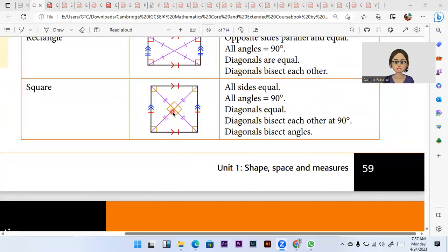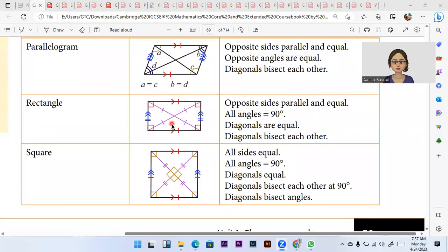Over here, diagonals bisect each other also at the angle of 90 degree. But in rectangle and in parallelogram, it's not necessary that diagonals bisect each other at the angle of 90 degree.